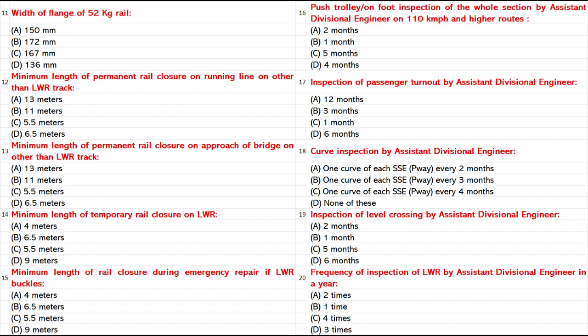Minimum Length of Permanent Rail Closure on Running Line on other than LWR track: A. 13 mm. B. 11 mm. C. 5.5 mm. D. 6.5 mm. Answer: C. 5.5 mm.